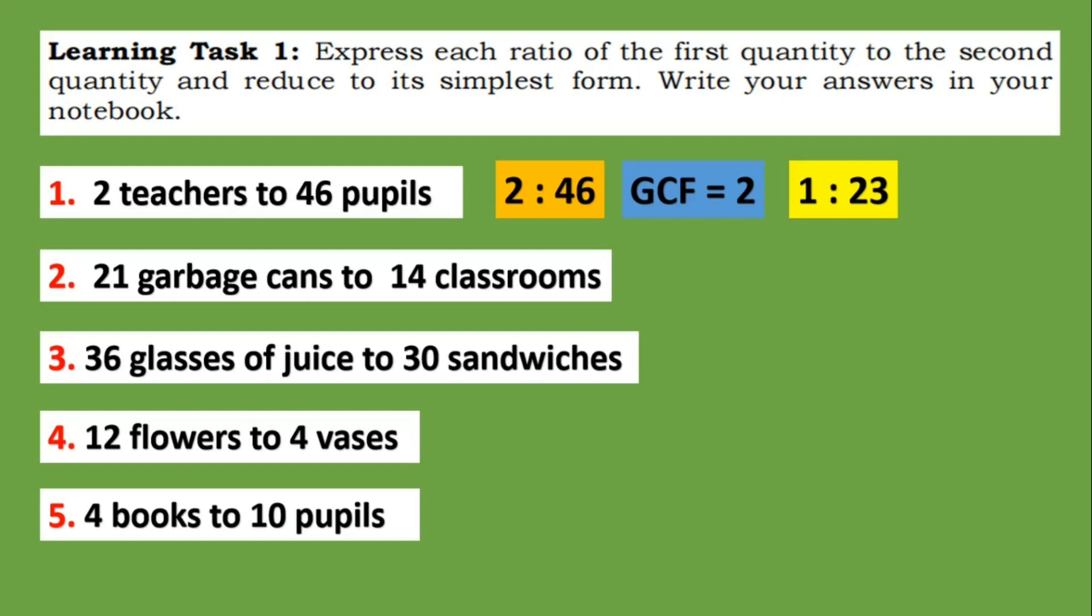For number two, we have twenty-one garbage cans to fourteen classrooms. So to write this in ratio, we have 21:14. The GCF is seven. So twenty-one divided by seven equals three, and fourteen divided by seven equals two. So the lowest term is 3:2.